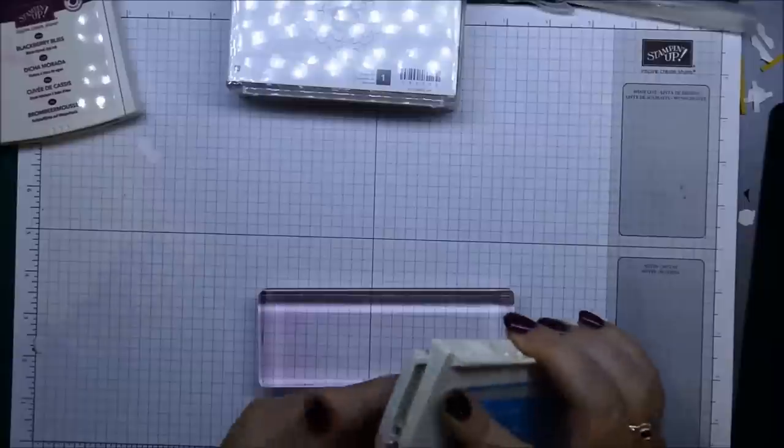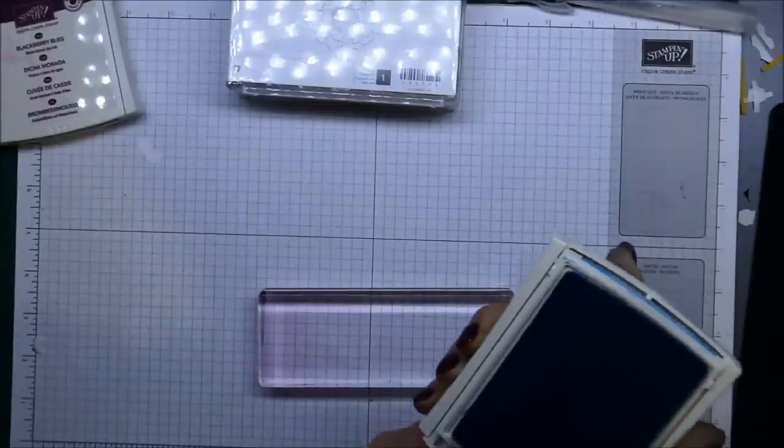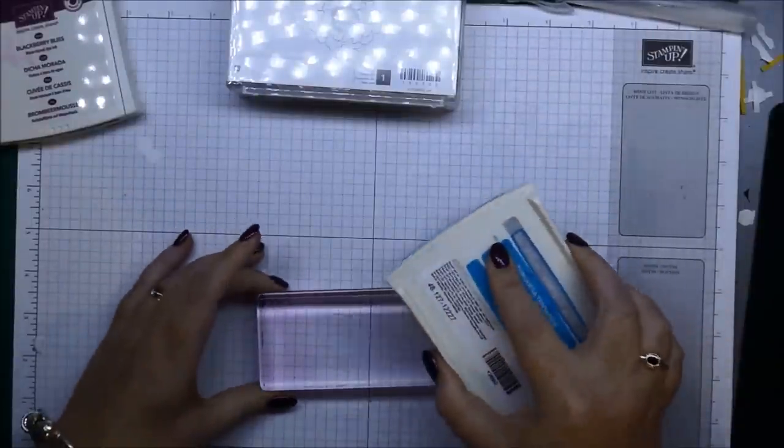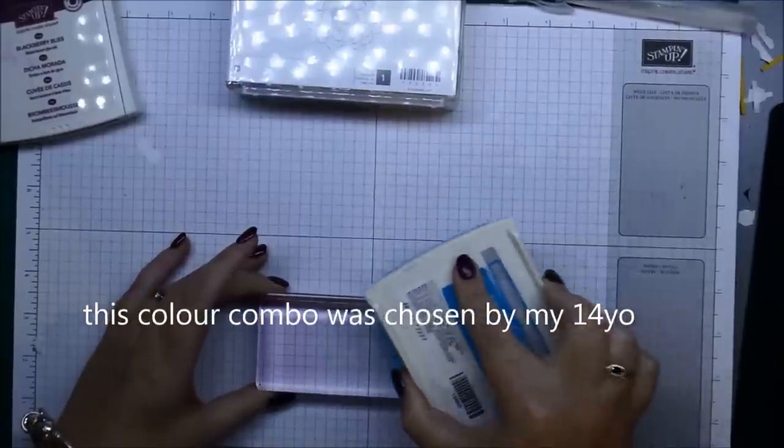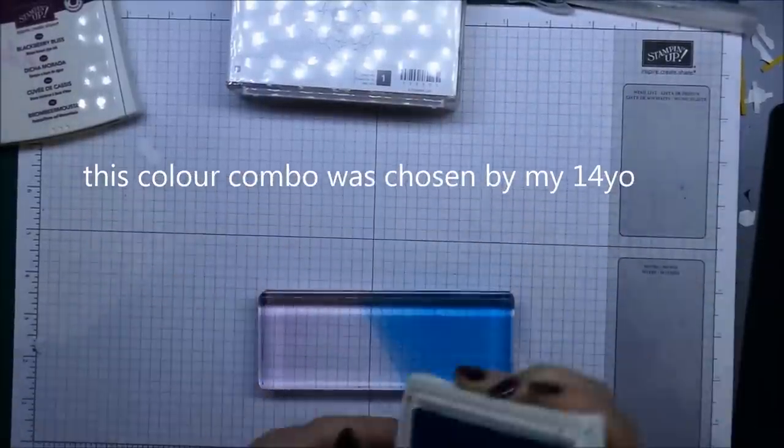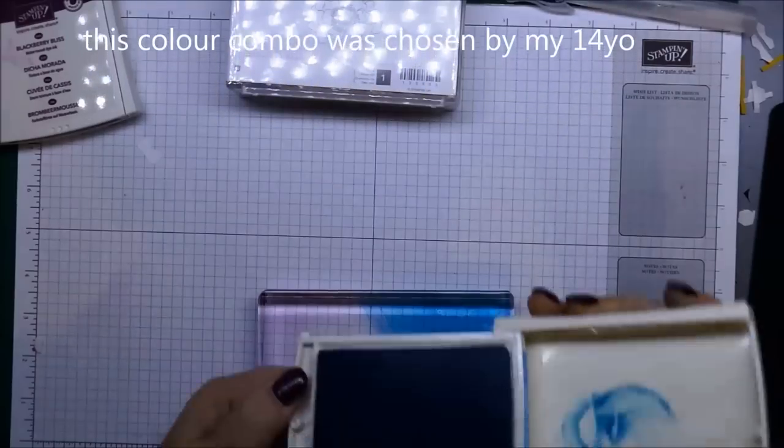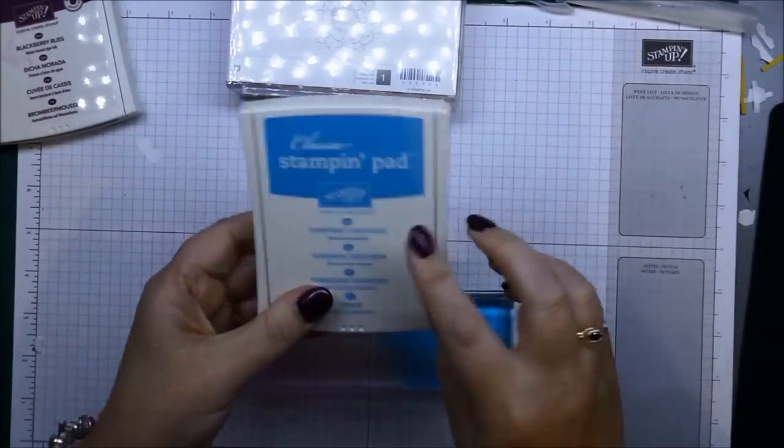Just grab your ink pads, just pick a couple of colors that you want to use, and then you're just going to put the ink direct onto the block. This color here is Tempting Turquoise.